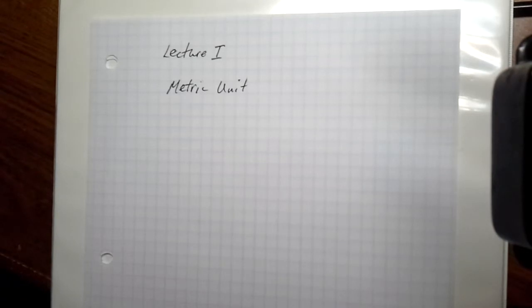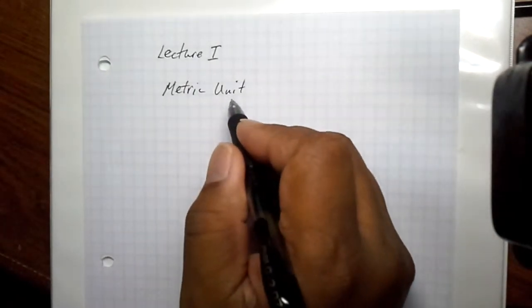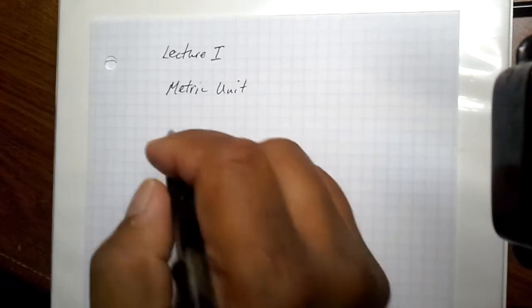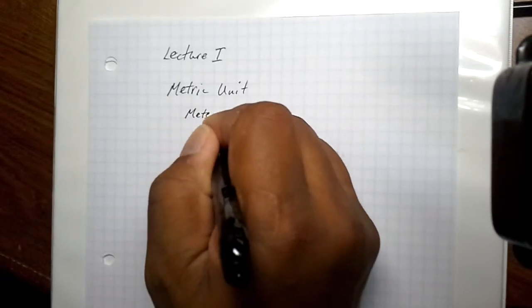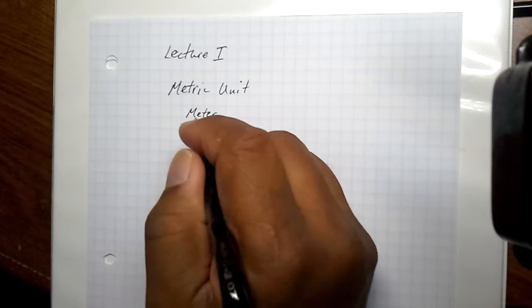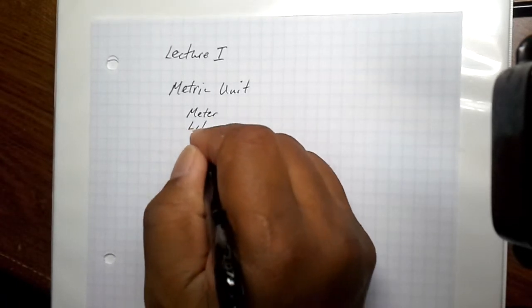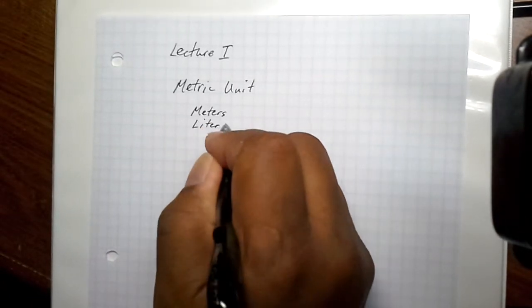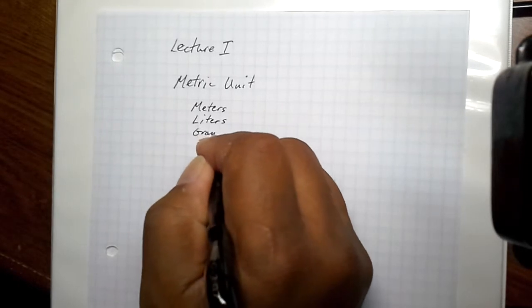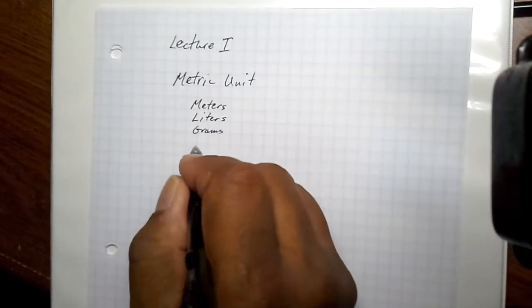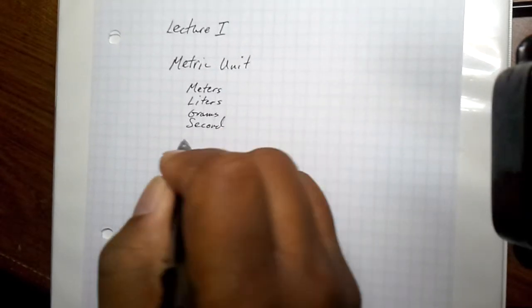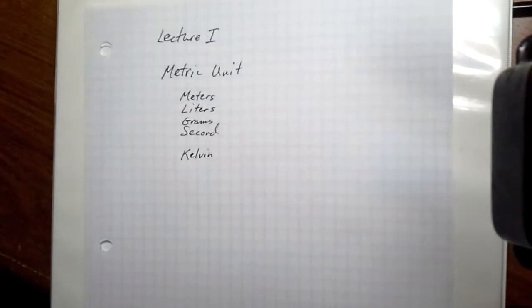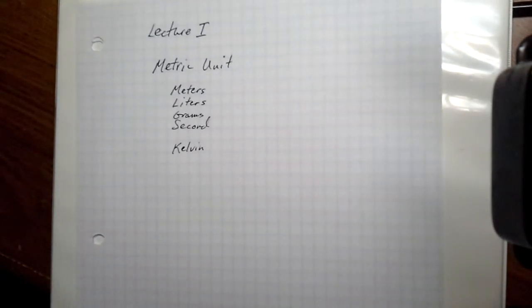We're going to begin this series of lectures on metric units, and you should be familiar with these metric units of measurement. We'll be using them frequently. Meters, liters, grams, seconds is a metric unit. And for measuring temperature, we need to understand degrees Kelvin.